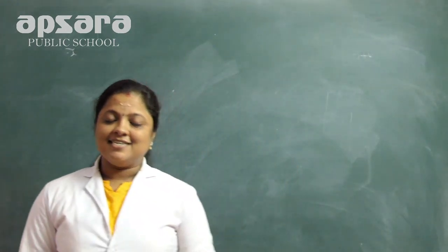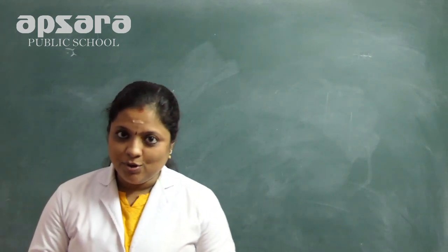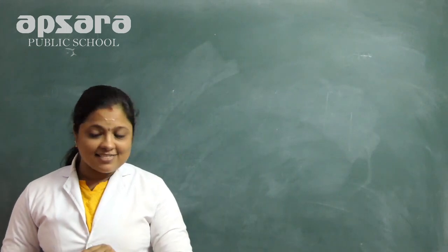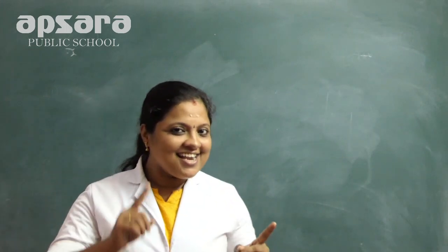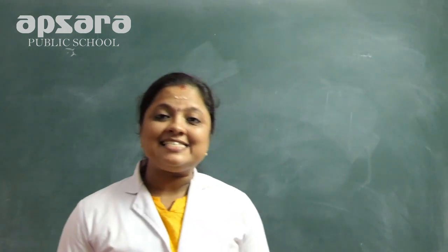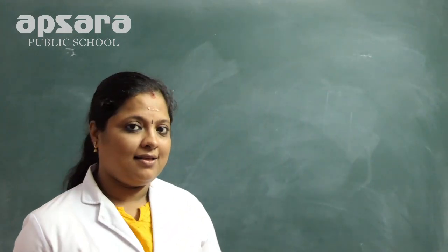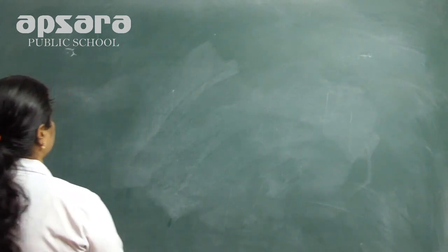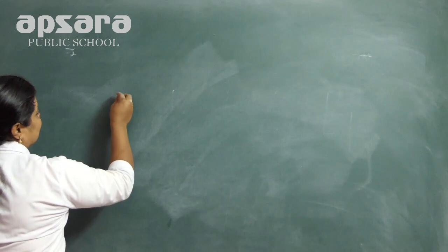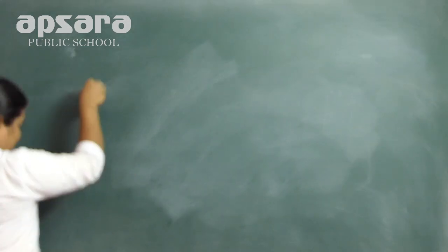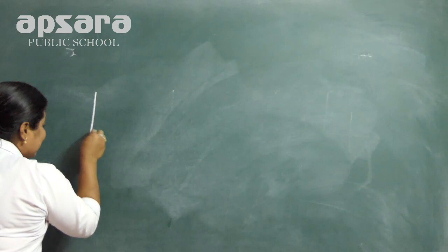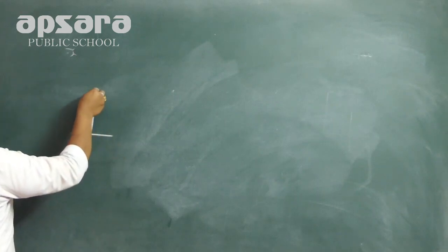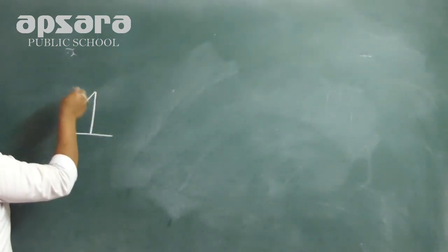Now I will teach you how to write one to ten. Dear kids, don't look here. Let's start number one. Number one. See? Standing line, sleeping line, and sliding line.